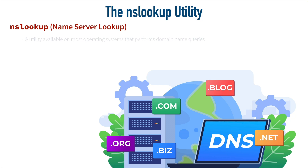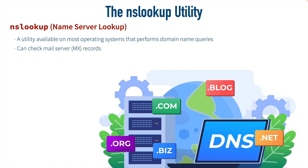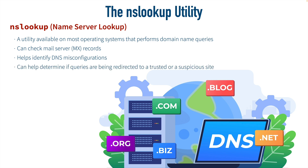To help troubleshoot and investigate DNS issues, we can use the NS Lookup utility — short for Name Server Lookup — available on most operating systems. It performs domain name queries and can check A records for IPv4 addresses, quad-A records for IPv6 addresses, and MX or mail server records. From a cybersecurity perspective, it helps identify if our queries are being redirected to a trusted or suspicious site.